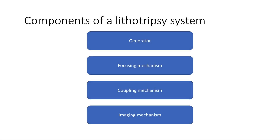First, let's think about the essential components of any lithotripsy system, regardless of the type of lithotripsy. You need a shockwave generator, you need some means of focusing the shockwaves onto the stone, you need a coupling mechanism — that is a way of transmitting the shockwave from the generator into the patient's body — and finally you need a reliable form of imaging, either fluoroscopy or ultrasound or indeed both, which will allow you to localise the stone for treatment.